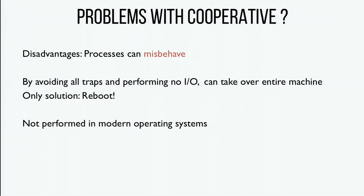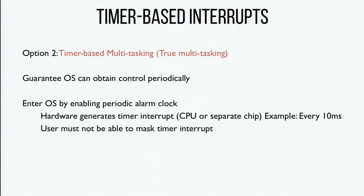Clearly cooperative multitasking isn't enough — we're not guaranteed a process will ever call Yield or have page faults. So we need a mechanism that ensures the OS gets control at periodic intervals. We have a hardware timer that generates an interrupt every millisecond or some fixed duration — it might be a separate timer chip or part of the main CPU. When that timer interrupt goes off, it follows the same code path as handling any interrupt: switch to kernel mode, go into the interrupt handler, handle the timer. Users can't mask timer interrupts — that would break the whole mechanism.